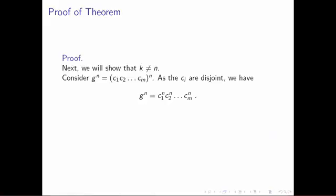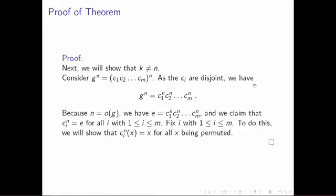Now let's show the other inequality: k ≤ n. This direction starts the same way. Let's take g and raise it to the nth power. Using our first observation, g^n = (c1 · c2 · ... · cm)^n = c1^n · c2^n · ... · cm^n. Because n is the order of g, we can apply property one of the definition: g^n equals the identity. By transitivity, c1^n composed with c2^n all the way through cm^n equals the identity function.